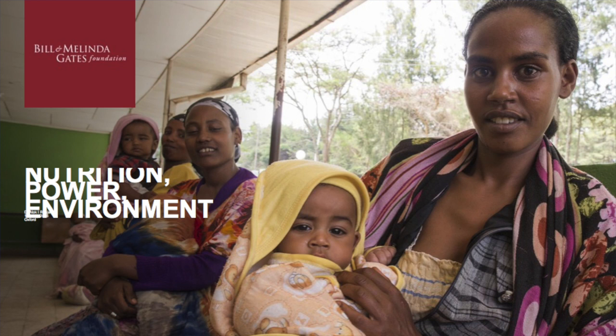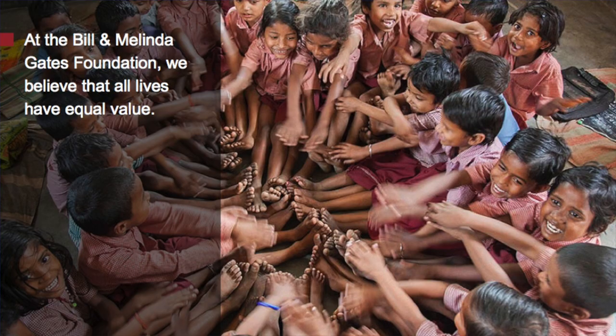At the foundation, we have a common belief that all lives have equal value. What I'll be sharing is a discussion around work we are doing on nutrition in two of the biggest states — Uttar Pradesh and Bihar. Jointly they have around 300 million population. These two states contribute around 11% of global stunting — every ninth stunted child is from either of these two states.